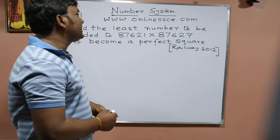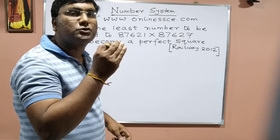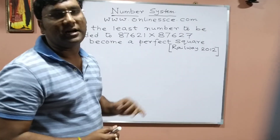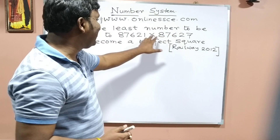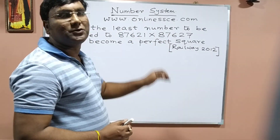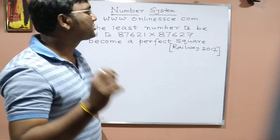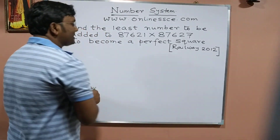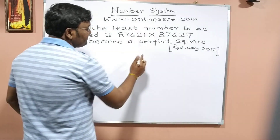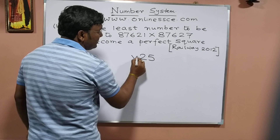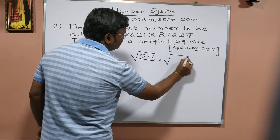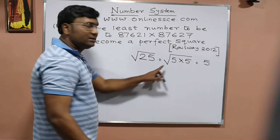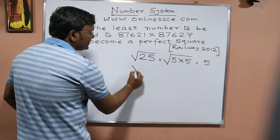We are going to show you the number. The least number — 25 is a rootable number. This means 36.